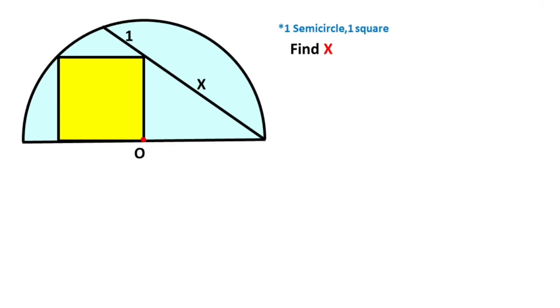Hello everyone, in this video we have one square and one semicircle. O is the center of the semicircle, here is given one, and this length is x.